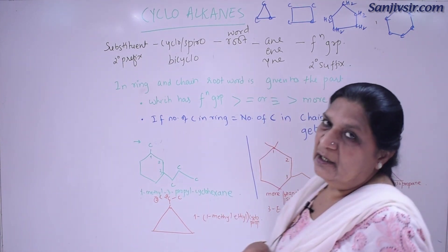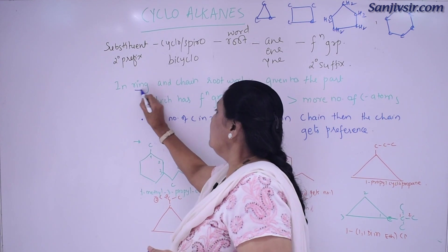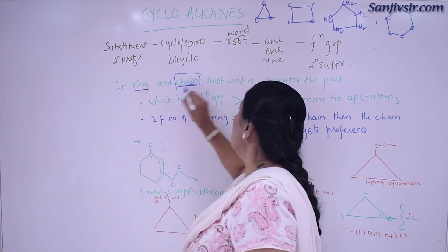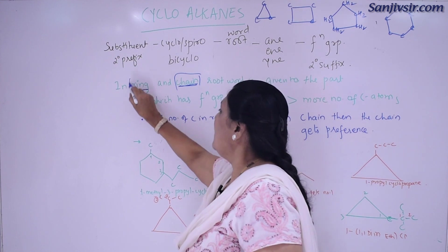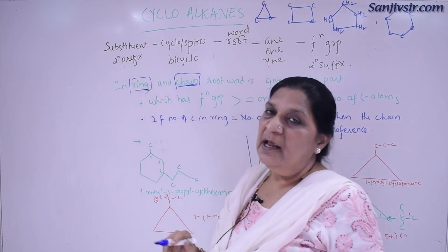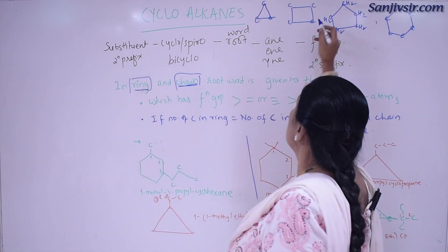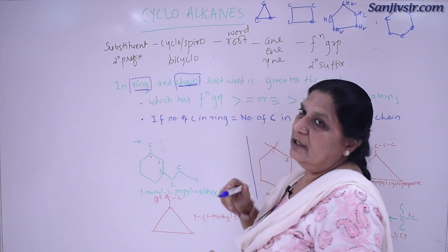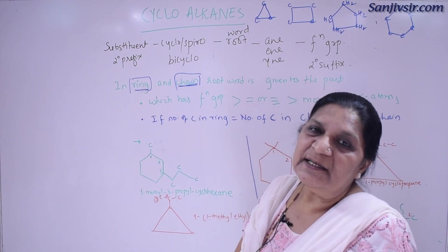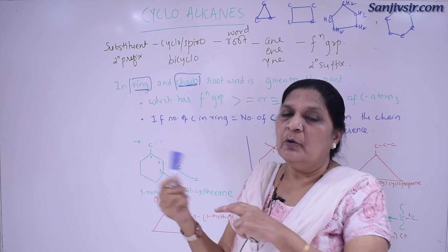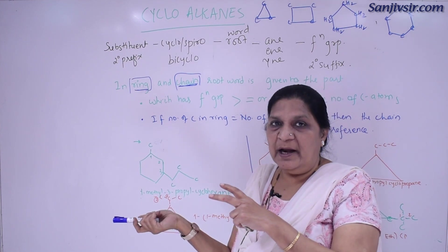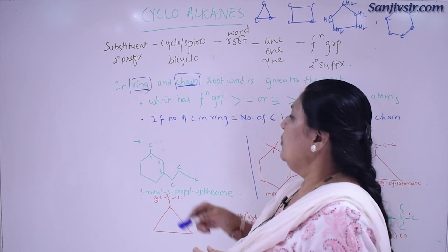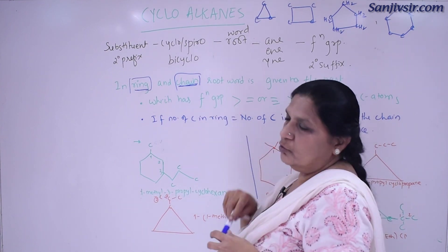Now, when both a ring and a chain are present in the structure, we can count the carbon atoms and name it directly. But if there are substitutions, then for a ring and chain, we must decide: which gets the root word — cyclo? The root name will be the parent name of the chain. So you have to follow these two rules.